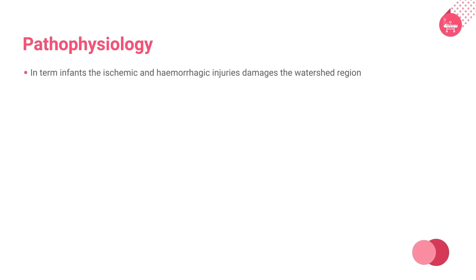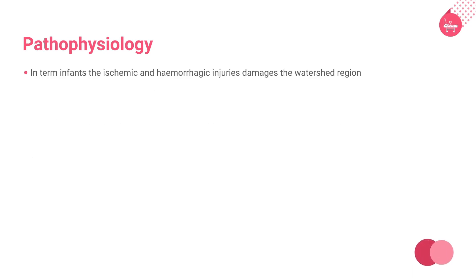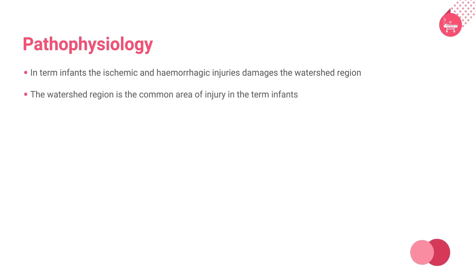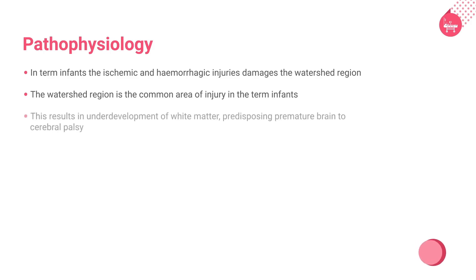In term infants, the ischemic and hemorrhagic injuries damage the watershed region — the area where three major cerebral arteries end in the cortex. The watershed region is the common area of injury in term infants, resulting in underdevelopment of white matter and predisposing the premature brain to cerebral palsy.